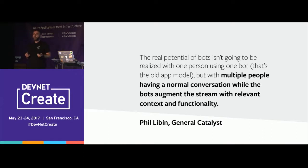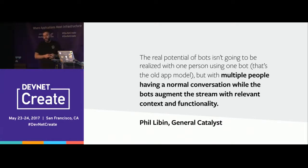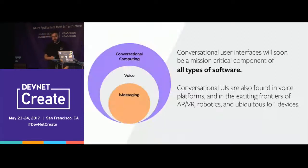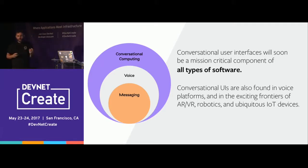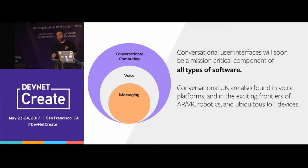That could be something as simple as talking about a bug in JIRA and the bot automatically recognizing it and bringing it into the chat room, or it could be a lot more complicated transactional things. We talk about messaging bots right now, but really the way we see it is that this is the beginning of a major shift in the way people are going to interact with software of all kinds.